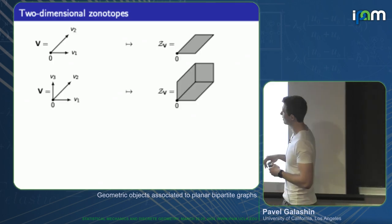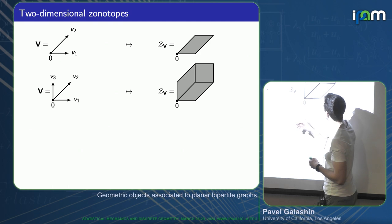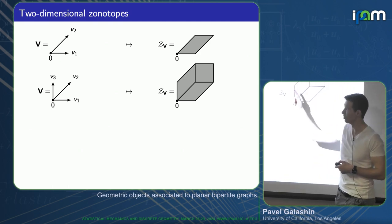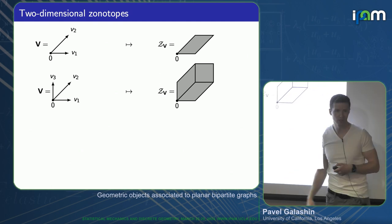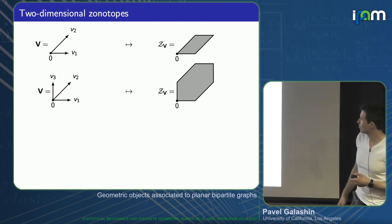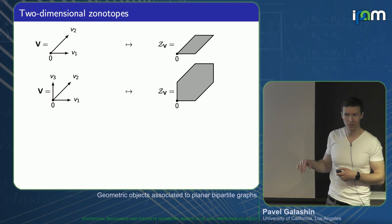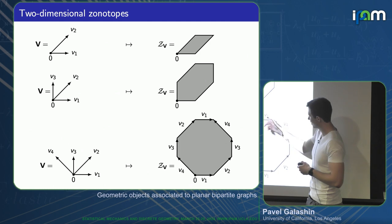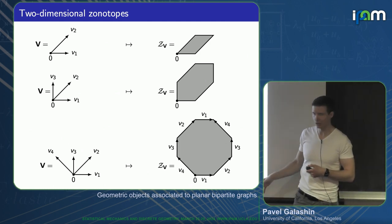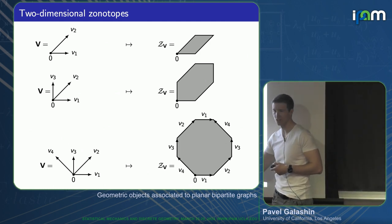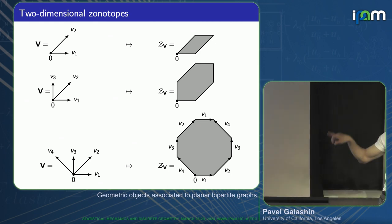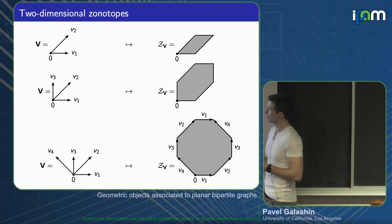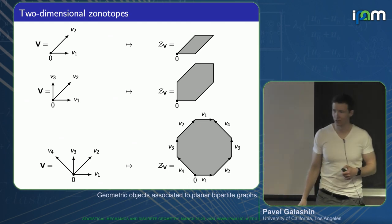In two dimensions: if I take two vectors, I take the Minkowski sum of two line segments and get a parallelogram. If I add another vector, I add a vertical strip, so I get a hexagon. More generally, with four vectors, I always get a centrally symmetric 2n-gon where every vector appears twice at the boundary. Two-dimensional zonotopes are easy — I'm going to focus on three-dimensional ones.